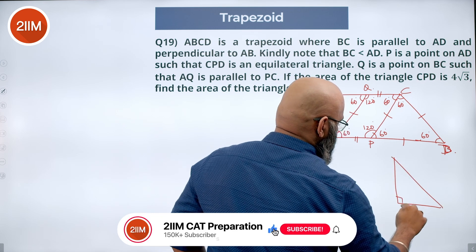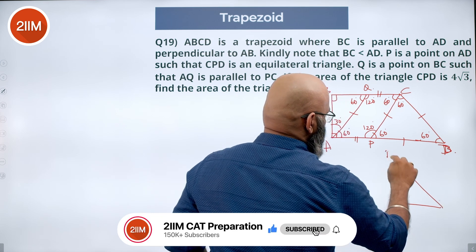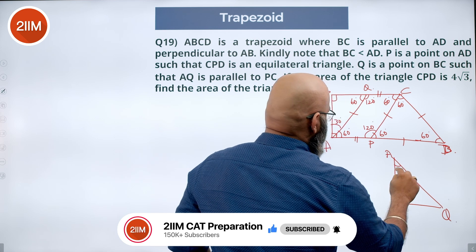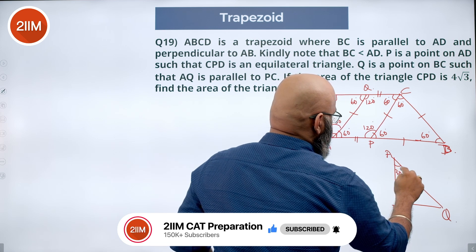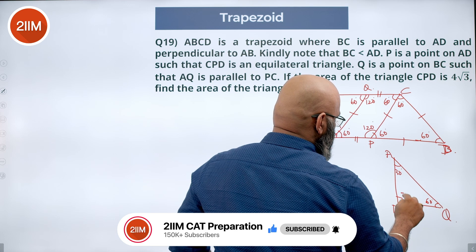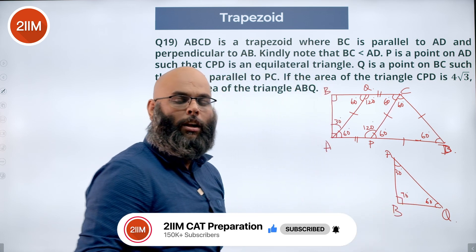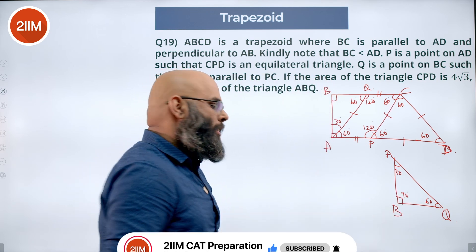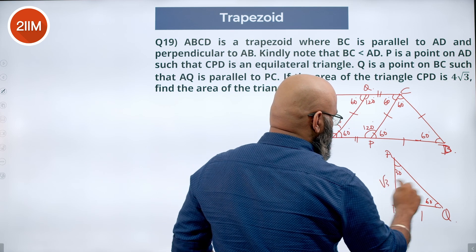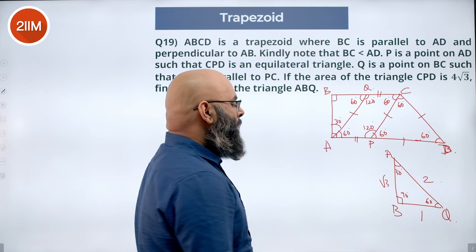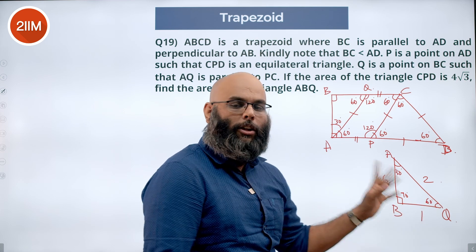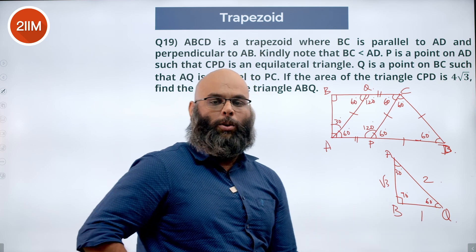We have a right-angle triangle ABQ where angle B is 90°, angle A is 30°, and angle Q is 60°. This is a 30-60-90 right triangle, which has sides in the ratio 1 : √3 : 2. If we can find AQ, we can easily find the other two sides.